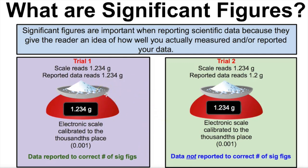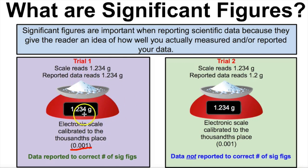So what does that mean? Let's suppose we're going to take the mass of some sugar or some powdery substance. We're going to use this little scale to take the mass, and we're going to repeat this twice — two trials. We notice our scale is precise to the thousandths place. We put this powder on our scale and it reads 1.234 grams. The student reports the data as 1.234 grams — reported to the correct number of sig figs. This tells the reader that the scale was precise to the thousandths place, giving them an idea of the precision of the instruments used.